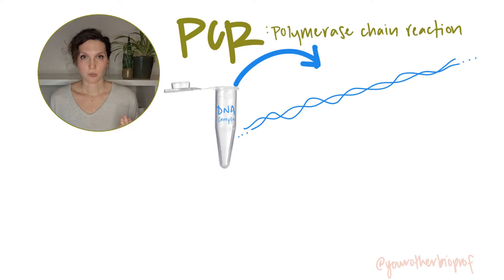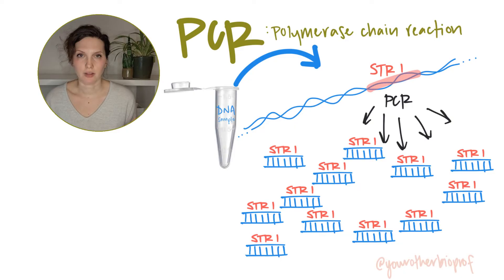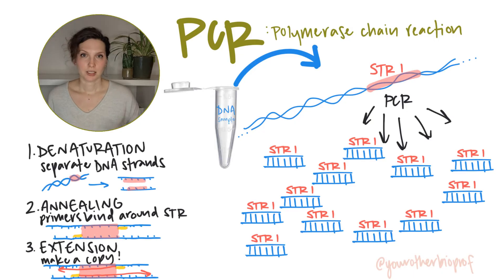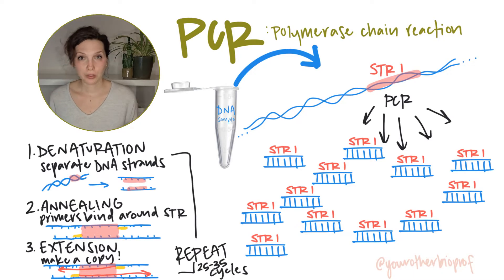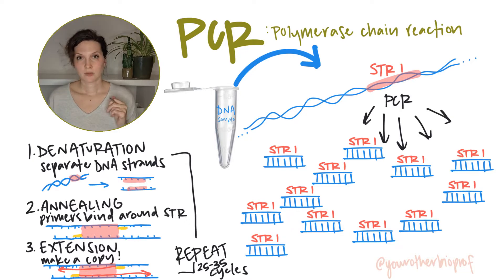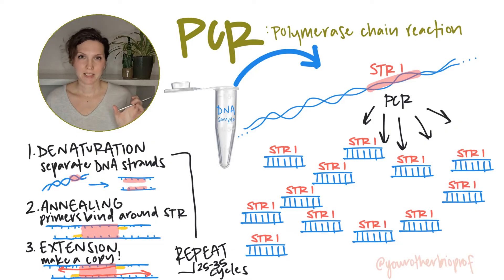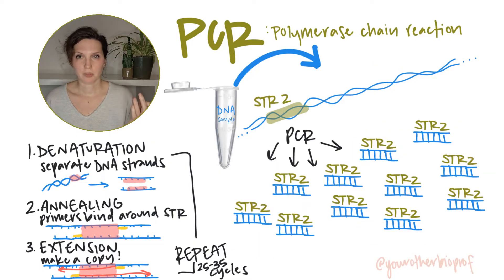With PCR, we're going to make many, many copies of our target DNA of interest. We're going to do this basically like DNA replication in a tube, using a series of heating and cooling events in order to make copies of our target DNA region. We're going to make millions of copies of each STR from each of the individuals that we're sampling.